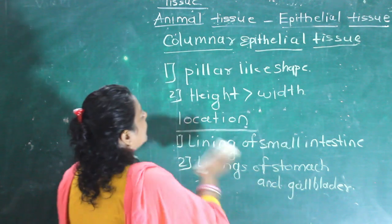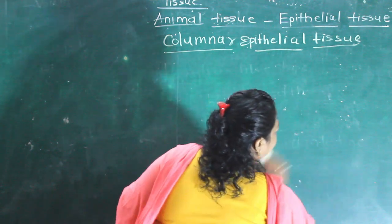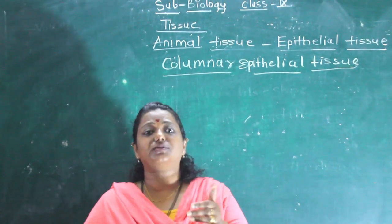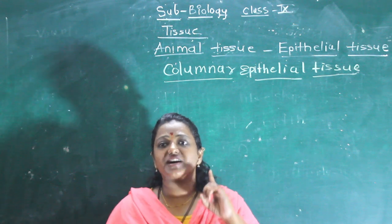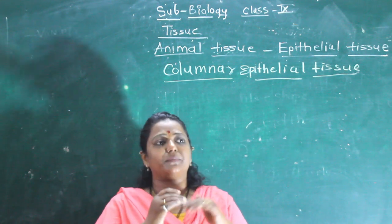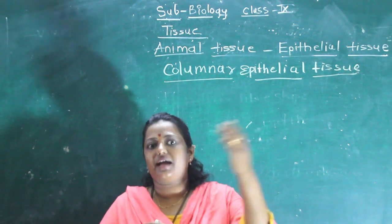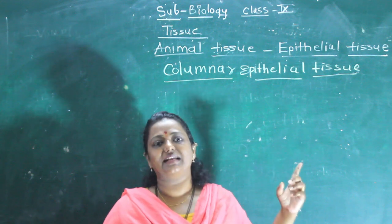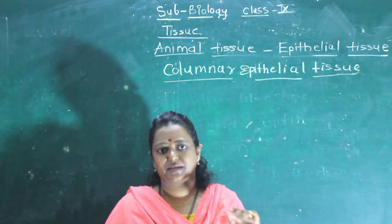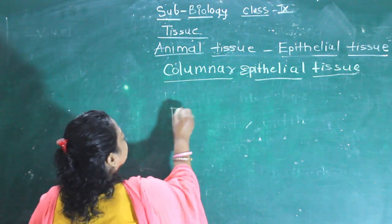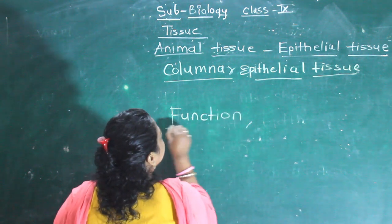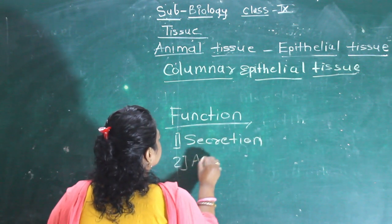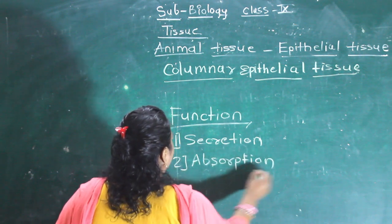The functions of columnar epithelial tissue are the same as cuboidal: secretion, absorption, and protection. These cells sit above the basement membrane, which separates epithelial tissue from other tissues and supplies blood to the epithelial tissue. First function: secretion — the gallbladder secretes specific enzymes to digest food. Second function: absorption — nutrients are absorbed in the small intestine through finger-like projections called villi. Third function: protection.